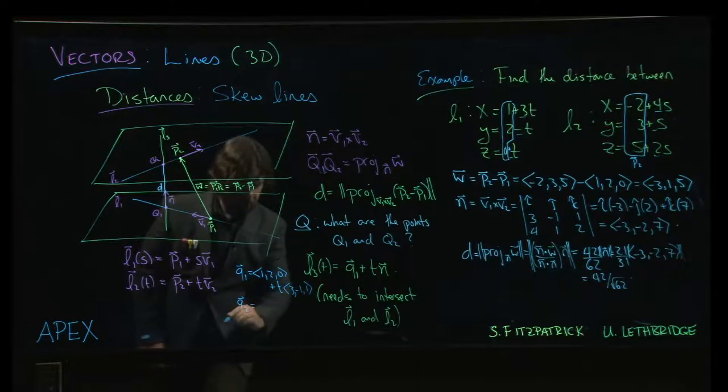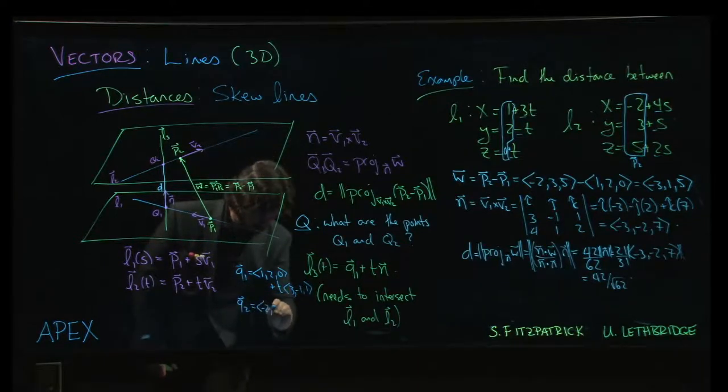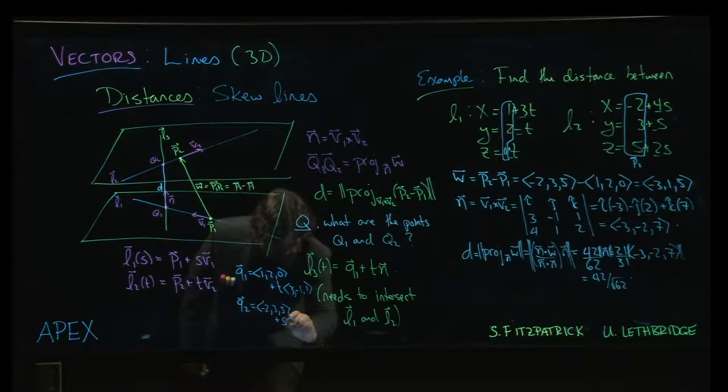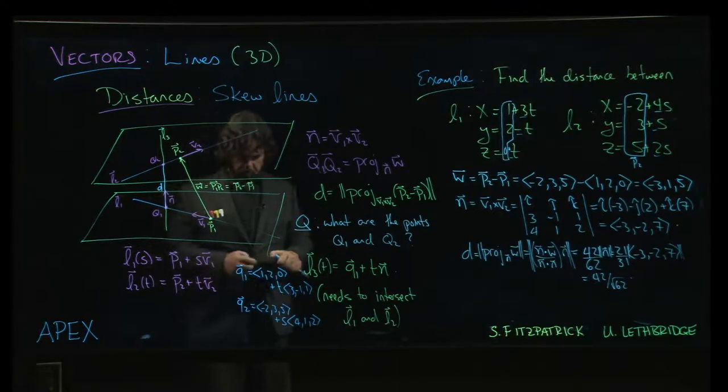q2 has to be minus 2, 3, 5 plus s times 4, 1, 2, right? Now q1, q2, if I take the difference, so let's do q2 minus q1.